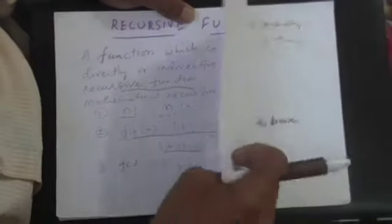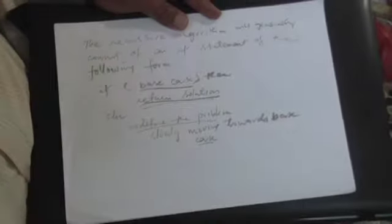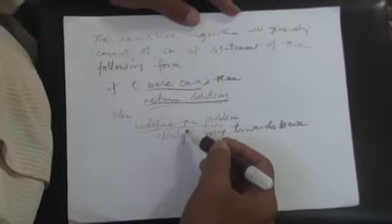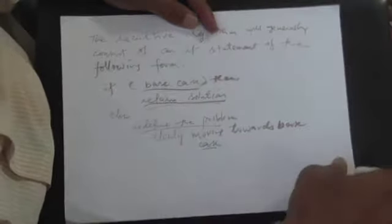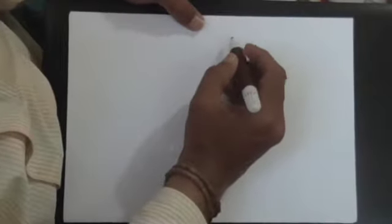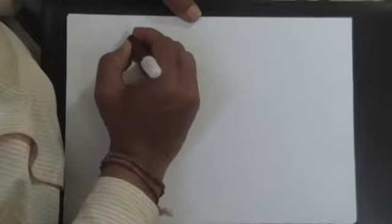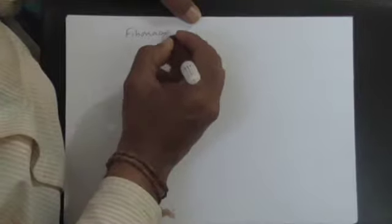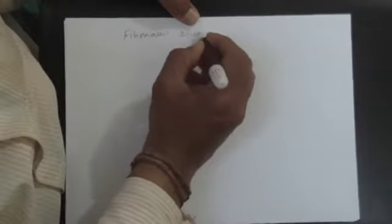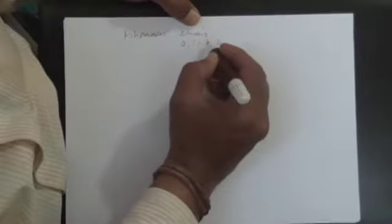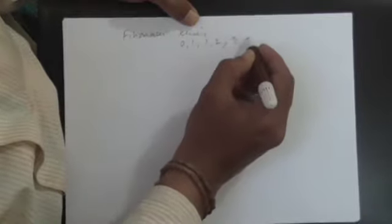In my lecture I have already discussed that there should be a base case and every successive step should take it to the base case. So in my Fibonacci number, I say that they are of the series, the Fibonacci series. It is like 0, 1, 1, 2. The sum of these two will give 2, these two will give 3, and these two will give 5.